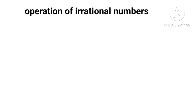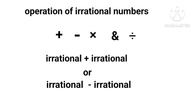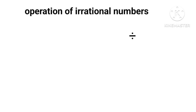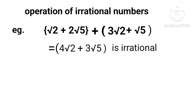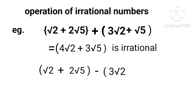In this video we shall try to know whether we can add, subtract, multiply and divide two irrational numbers. There are four operators: addition, subtraction, multiplication, and division. When we add or subtract two irrationals, the outcome is always irrational. For example, two plus two√5 plus three√2 plus √5 equals four√2 plus three√5, which is irrational. Similarly, two√2 plus √5 minus three√2 plus √5 equals minus two√2 plus √5, which is also irrational.